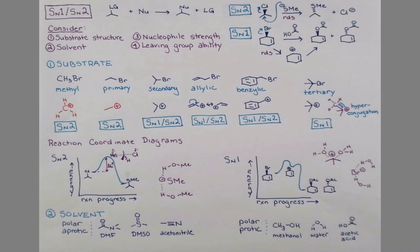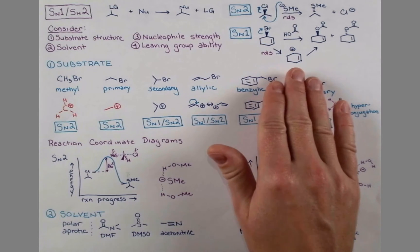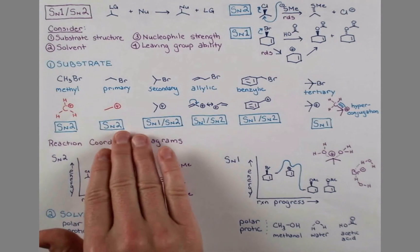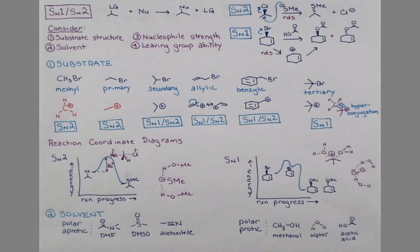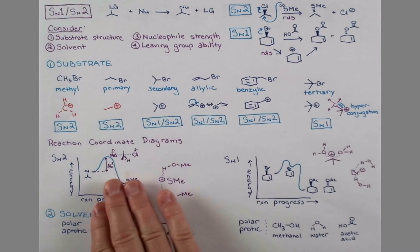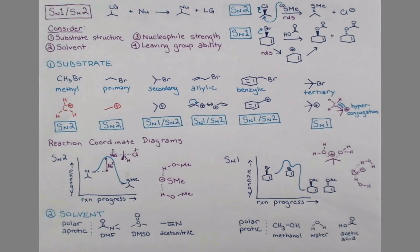The structure of the substrate is the most important factor in determining if a reaction will go SN1 or SN2. Because the SN1 reaction goes through this intermediate carbocation, substrates that cannot form a carbocation will not proceed by this mechanism. Substrates for which the SN2 backside attack is hindered, such as this tertiary substrate, cannot proceed via the SN2 mechanism and only has SN1 available to it.